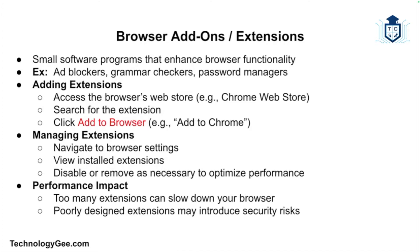Next, let's talk about browser add-ons or extensions. Browser extensions are small software programs that enhance the functionality of a browser. You might install an ad blocker to stop annoying ads or a grammar checker for writing assistance. Extensions can be added from the browser's web store — in Chrome, you go to the Chrome Web Store, search for the desired extension, and click Add to Chrome. To manage extensions, navigate to browser settings where you can view, disable, or remove installed extensions as needed.